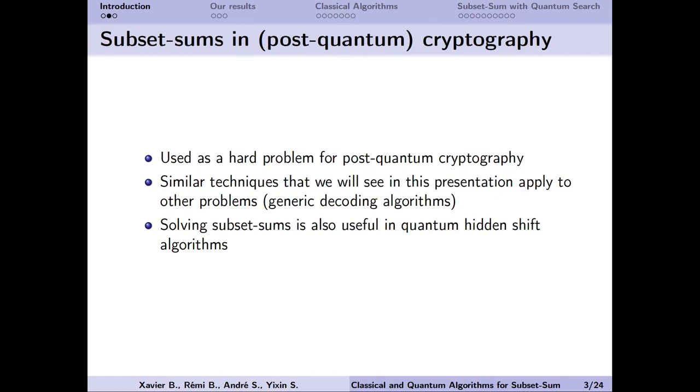The subset sum problem is relevant for cryptography, because it is used as a hard problem for post-quantum cryptography, and it appears as a subroutine in the quantum hidden shift algorithm, used for isogeny-based cryptanalysis. Furthermore, the techniques that we will see also apply to other problems, such as generic decoding algorithms.